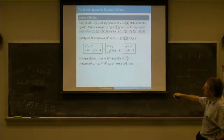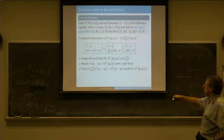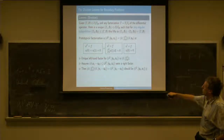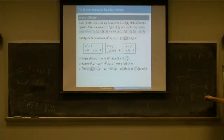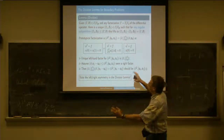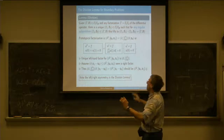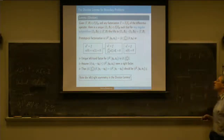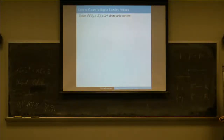You can prove that this cannot be a right factor here, because that would allow you to multiply by that, and then you would get something that contradicts this division number. So you observe once again that the left and the right factors behave in a rather asymmetric way.